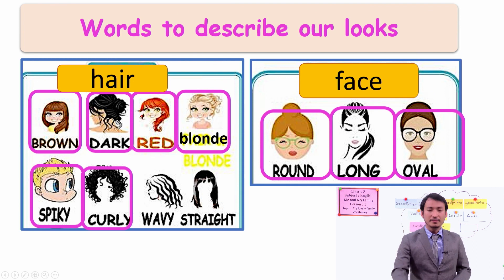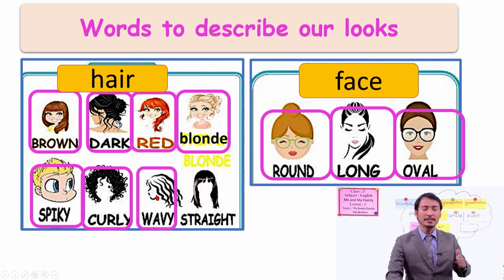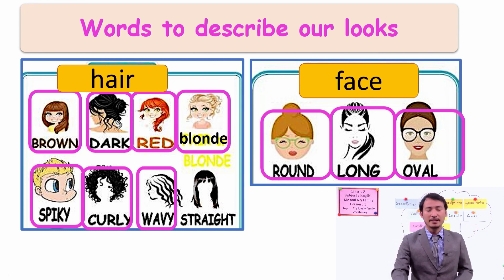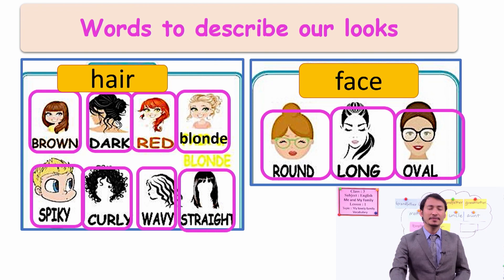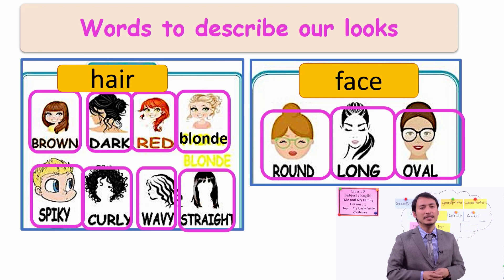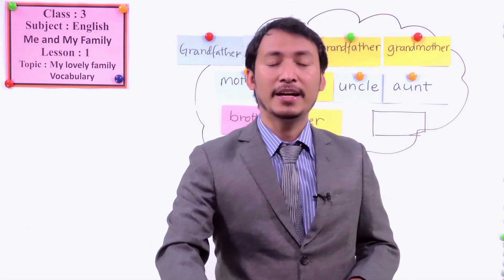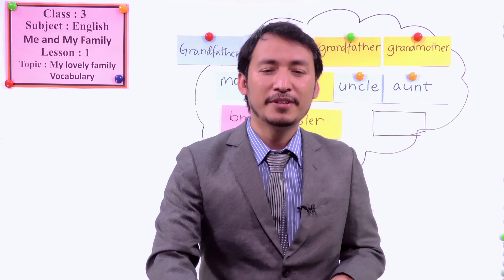Another kind of hair is wavy — it's going like a wave of a river. Another one is straight. Many of you have straight hair — straight is just going straightly down. These are different kinds of hair you can describe.